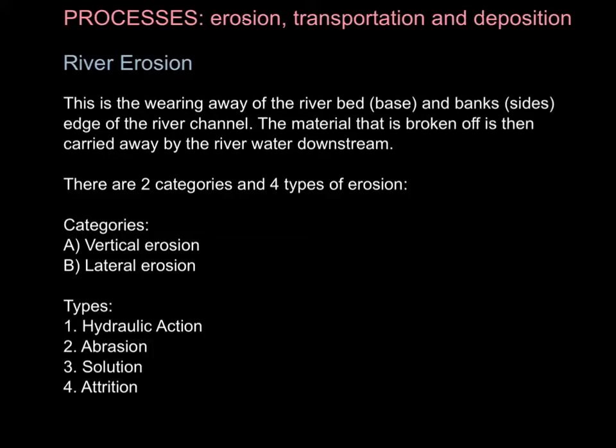River erosion is defined as the wearing away of the river bed (its base) and its banks (its sides), or the edge of the channel. The material that is broken off is then carried away by the river water itself, downstream. There are two categories of erosion, and within these categories, there are four types of erosion.